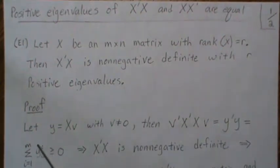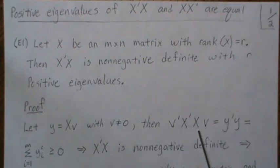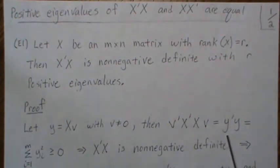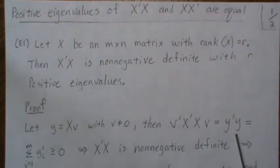Here's the proof. Let Y equal X V, where V is not equal to zero. Then this holds if we take V prime X prime X V, which if we define Y like this, is Y prime Y.